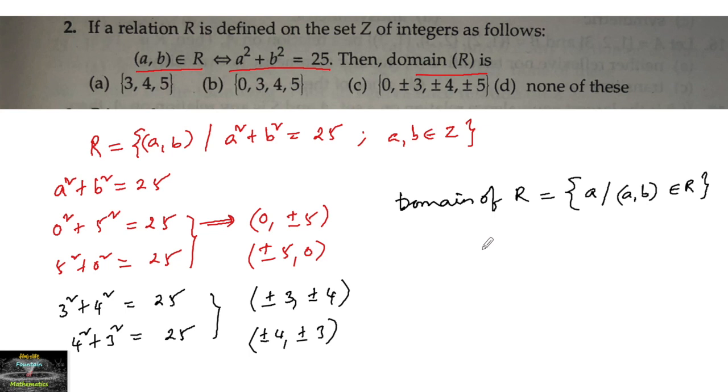We can write: {0, ±3, ±4, ±5}. So answer option (c) is the right answer.